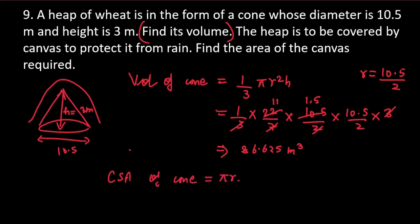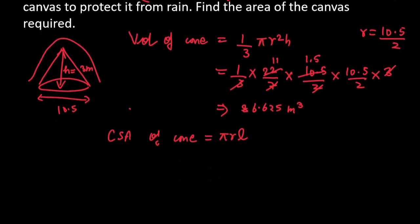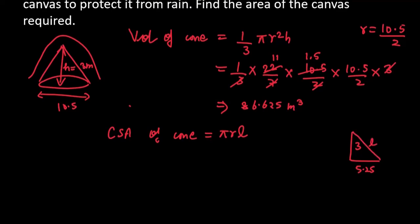Which will be πrL. R value we have, but not L. So L is slant height. So you have H and the radius is 5.25. What you have to do is find slant height. So now we apply Pythagorean theorem here.